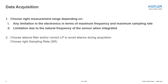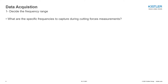How we can choose the right measurement range depends on two things. The first thing we should consider is what are the specific frequencies to capture during cutting force measurements. Depending on milling, grinding, or turning, we are working with different machine and process dynamics. We have the RPM of the workpieces, the RPM of the tools, and the cutting edge passing frequencies. For example, with a milling tool having four cutting edges, the cutting edge passing frequency is four times your RPM.